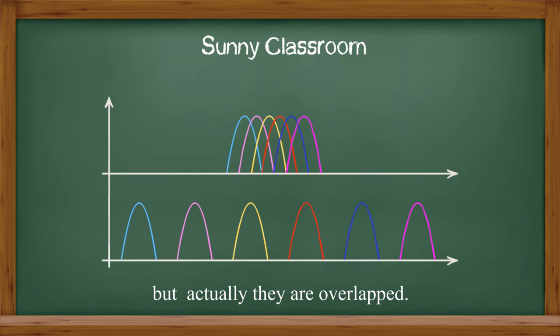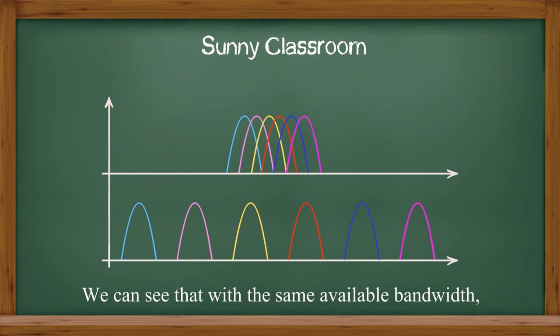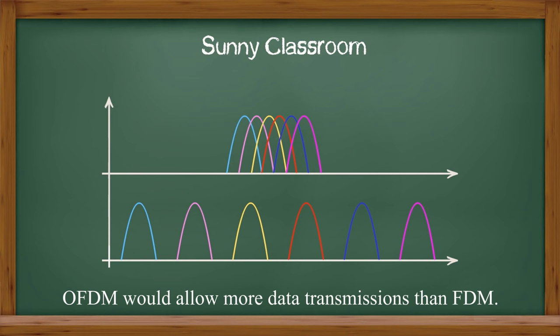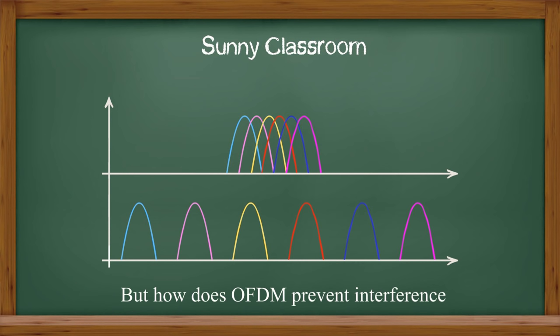We can see that with the same available bandwidth, OFDM would allow more data transmissions than FDM. But how does OFDM prevent interference while multiple subchannels overlap each other?